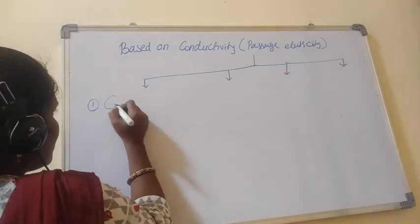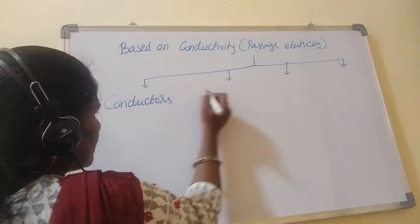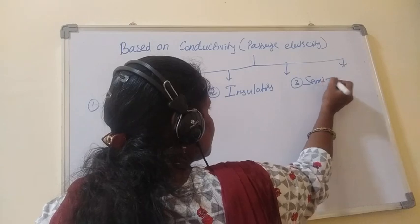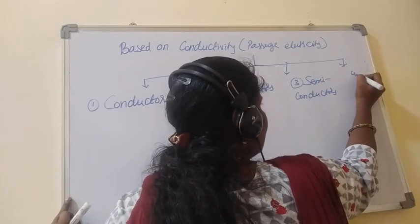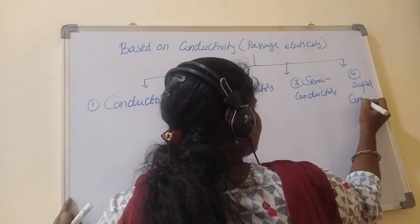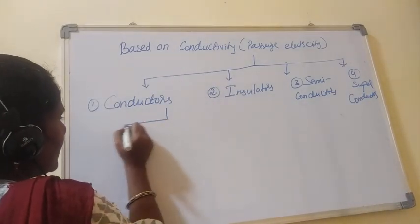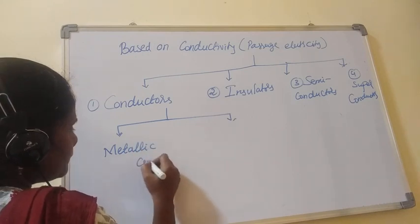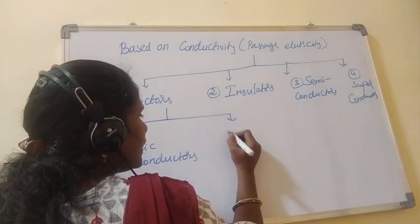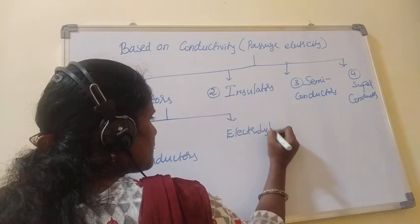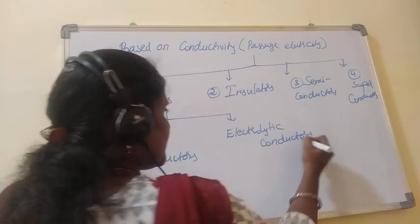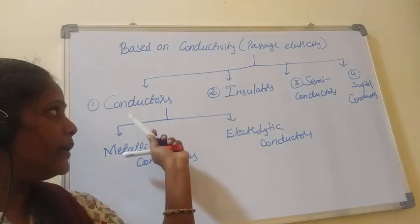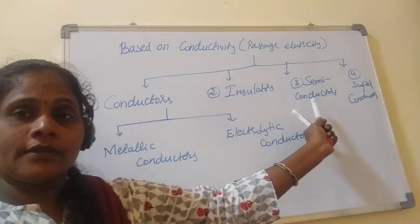The four types are: number one, conductors; number two, insulators; number three, semiconductors; and number four, superconductors. These conductors are again classified into two types: metallic conductors and electrolytic conductors.